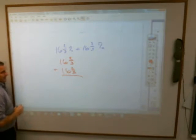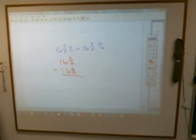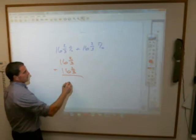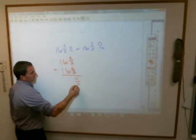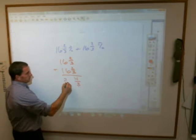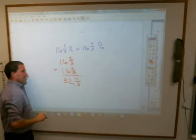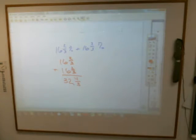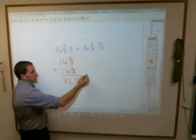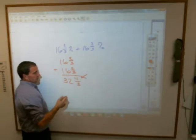What do I get when I add two-thirds plus two-thirds? Two-thirds plus two-thirds is, Abram? Four-thirds. Four-thirds. What do I get when I have sixteen plus sixteen? Thirty-two. Am I allowed to leave that? No. No, because four-thirds is what we call an improper fraction.